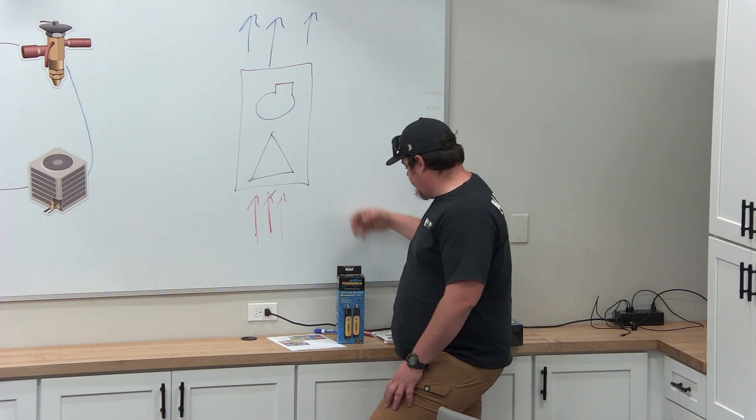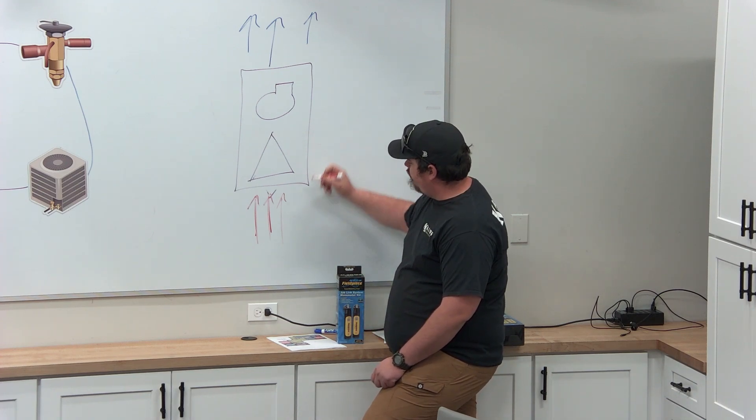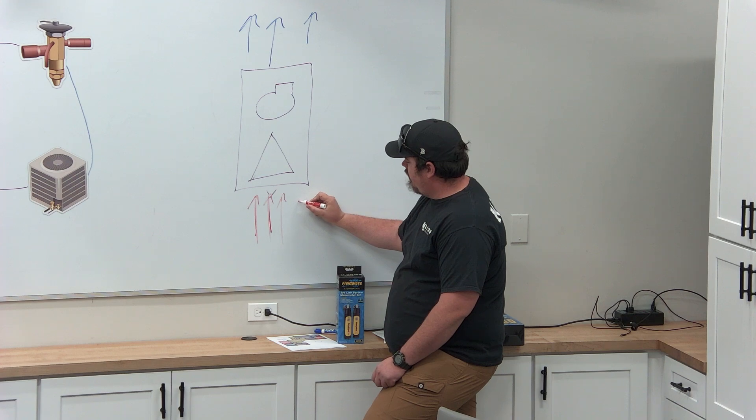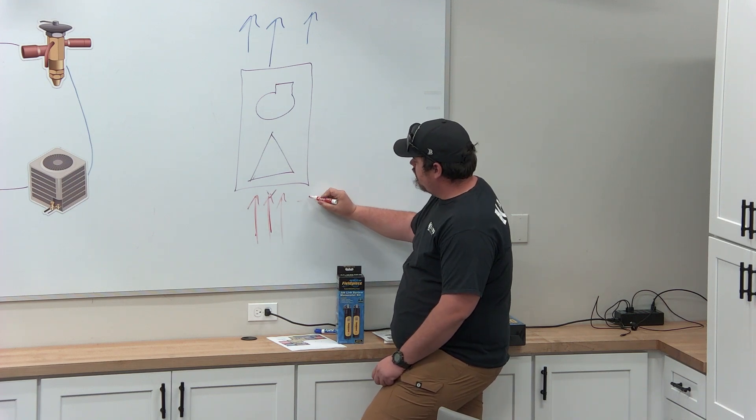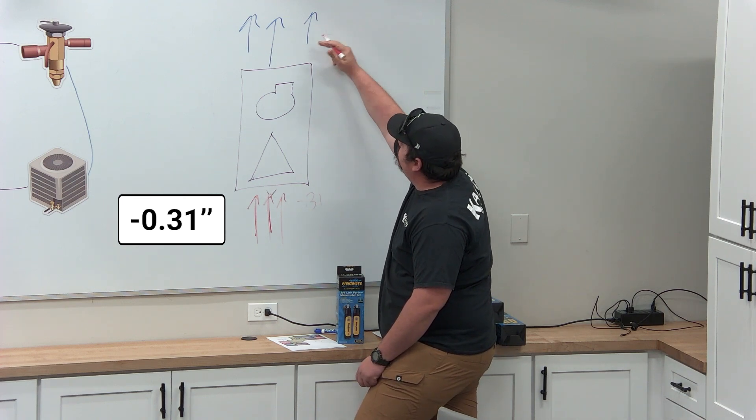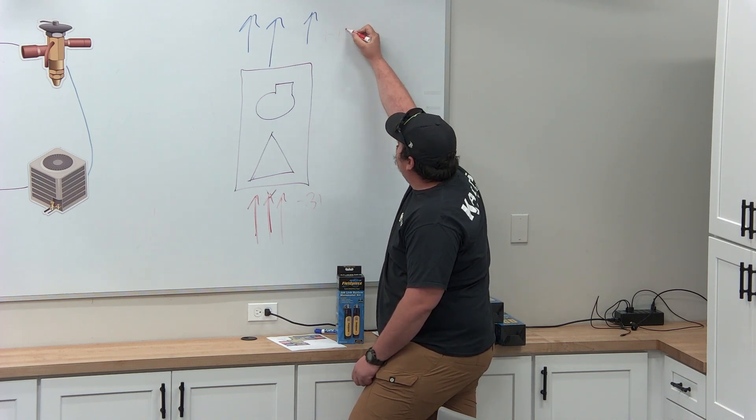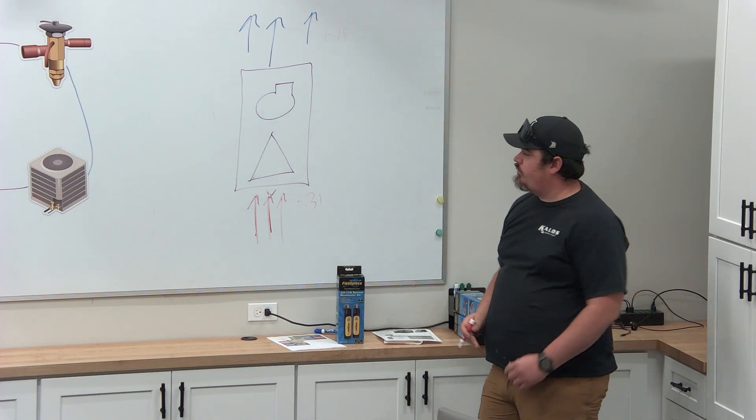So if we say that this system right now at a 5-ton and it's rated for a 0.5, and we have minus, because your minus will be here because it's sucking through, so minus 0.31, and then we have a positive because we're throwing air, 0.19, that's going to give us that 0.5, if that's in a perfect world where we're at.